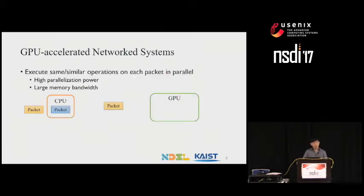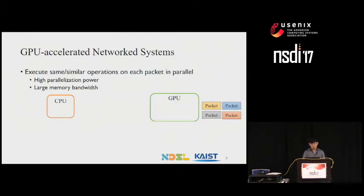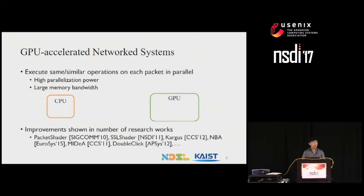Modern GPUs have been widely used to accelerate many compute and memory-intensive applications. Applications benefit from GPUs' hundreds to thousands of parallel processing cores and large memory bandwidth. Many network applications nicely fit the execution mode of GPU. While a CPU processes one packet at a time, a GPU would batch a large number of packets and process them in parallel to accelerate throughput. As a result, there have been many research works that show performance improvement of network applications using GPU over CPU.